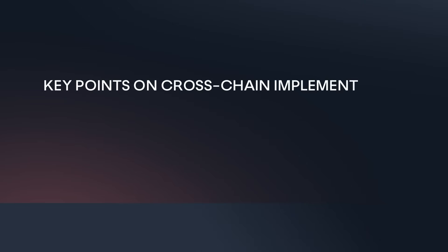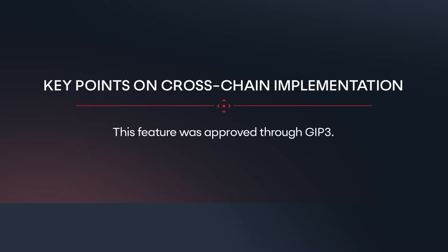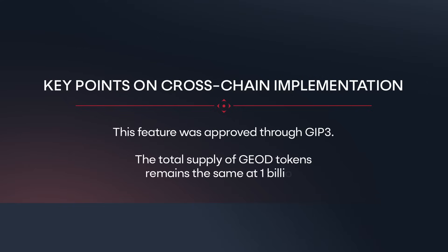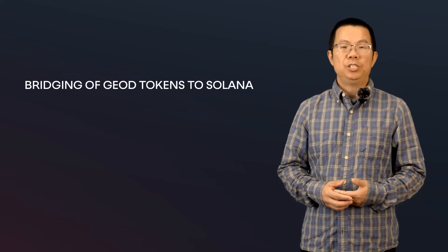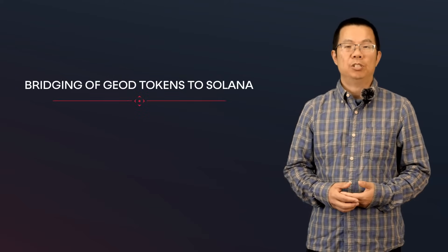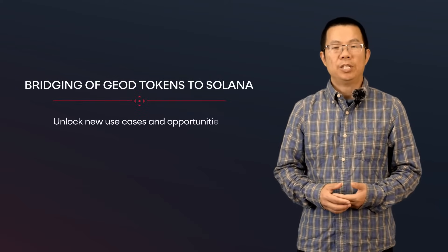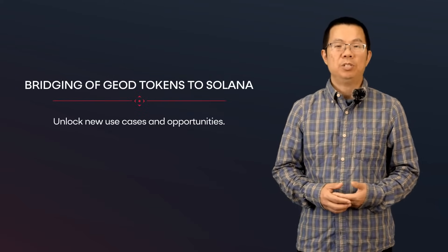Key points on cross-chain implementation: this feature was approved through GIP3. You can find the feature proposal link in the description box below. The total supply of GLD token remains the same at one billion. The bridging of GLD tokens to Celona will unlock new use cases and opportunities.